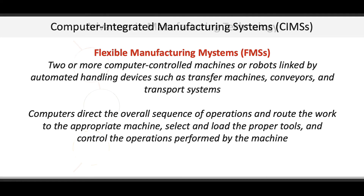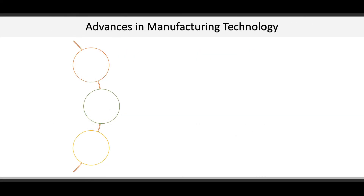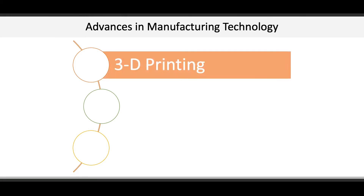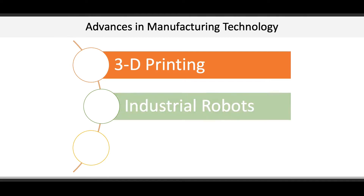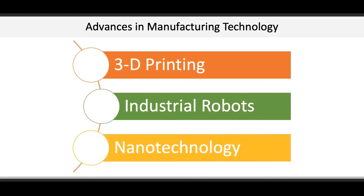The next topic in Chapter 4 highlights some interesting advances in manufacturing technology. One of them is 3D printing, which can build solid objects from a digital file. Another is industrial robots, which can be trained like humans and cost a fraction of what robots cost today. And then there's nanotechnology, which works at the molecular level.